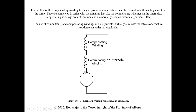Both commutating and compensating windings are shown hooked in series so they see the same current to cancel out the armature reaction effects. They are wound completely opposite to the armature winding to oppose that magnetic field. Compensating windings are not common and are normally seen only on motors larger than 100 horsepower. The use of commutating and compensating windings virtually eliminates the effects of armature reaction even under varying loads, maintaining that main field flux as straight as possible to eliminate arcing and sparking on the brushes.